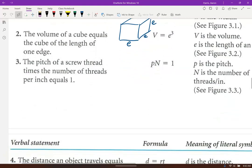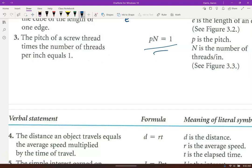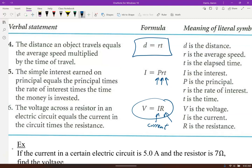The pitch of a screw thread times the number of threads per inch equals one. P is your pitch and N the number of threads. Here's another classic, distance equals rate times time. Simple interest is the principle you put in times the interest rate as a decimal times the t time in years. And finally voltage is I the current times R the resistance.